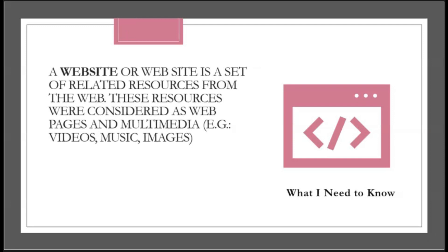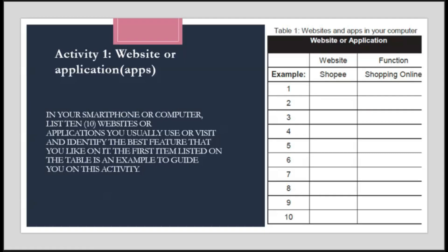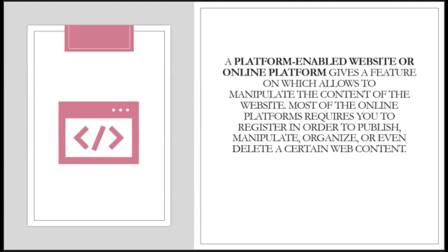One of the tools we usually use if we need to answer a question from a subject is a website, which we can use when we are online. A website is a set of related resources from the web. These resources are considered as web pages and multimedia. Websites and applications are now accessible through smartphones. In this activity, using your smartphone or computer, we are going to list down 10 websites or applications you usually use or visit and identify the best feature that you like about each one.